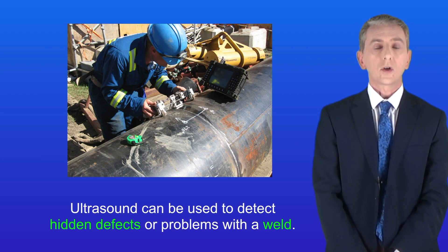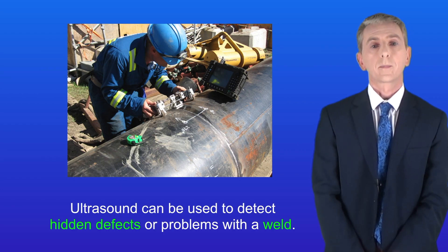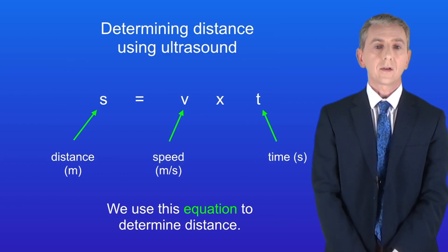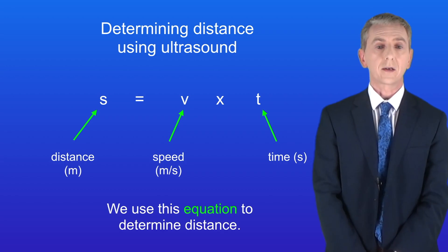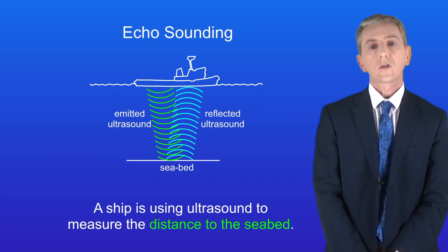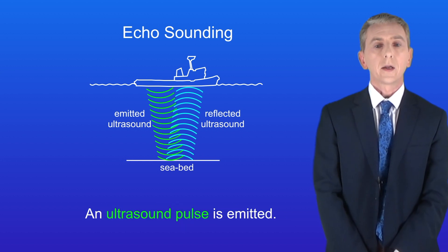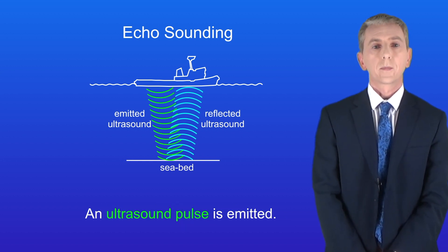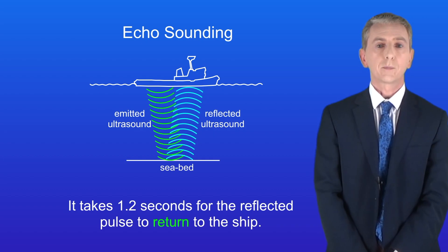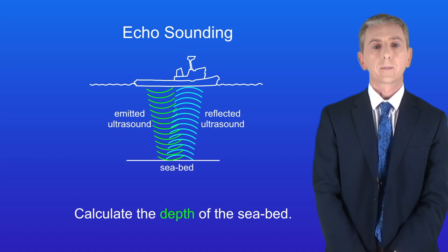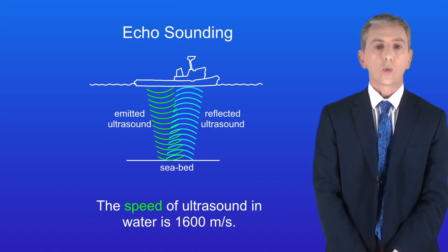Let's look at how we can use ultrasound to determine distance. We use the equation: distance in meters equals speed in meters per second multiplied by time in seconds. Here's a typical question: a ship is using ultrasound to measure the distance to the seabed. An ultrasound pulse is emitted and it takes 1.2 seconds for the reflected pulse to return to the ship. Calculate the depth of the seabed. The speed of ultrasound in water is 1600 meters per second.